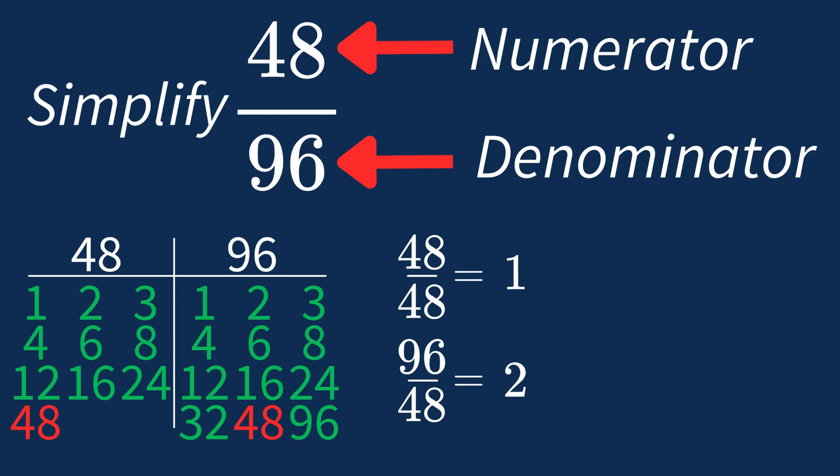So after dividing, the simplified fraction is 1 over 2. And we know that 1 over 2 is in its simplest form, because the only common factor between 1 and 2 is 1. And when 1 is the largest common factor, we know that fraction is already in its simplest form.